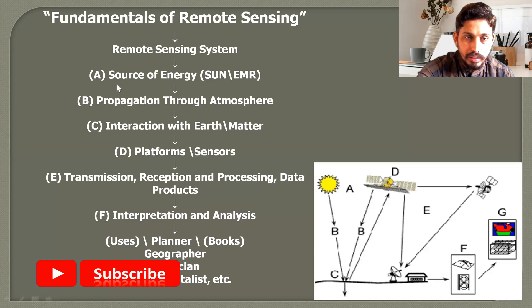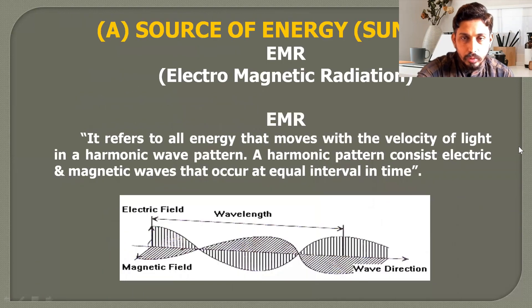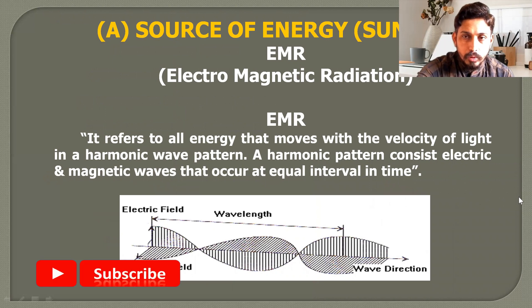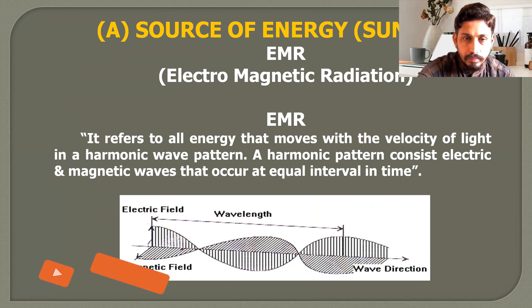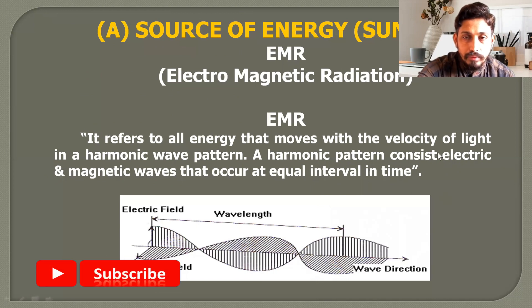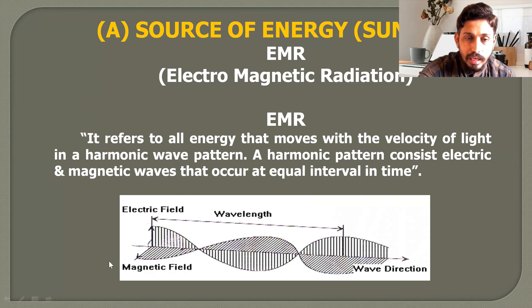Now moving to each fundamental point in detail. For optical remote sensing, the main source of energy is the sun. The energy coming from the sun is known as electromagnetic radiation. Electromagnetic radiation refers to all energy that moves with the velocity of light in a harmonic wave pattern. A harmonic pattern consists of electric and magnetic waves that occur at equal intervals in time. All the energy from the sun is in the form of electric and magnetic waves.